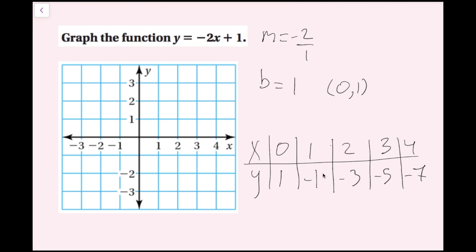So what I'm going to do is plot these points, and then use my slope to plot any other point that will fit here. I have (0, 1), (1, -1), (2, -3), and that's all that fits. But I can also go up 2, left 1 repeatedly to plot additional ordered pairs. Now I'm going to draw my line. So we've successfully graphed the function y equals negative 2x plus 1 — we could have done it using slope-intercept form or by making a table of values.